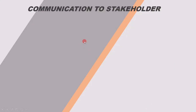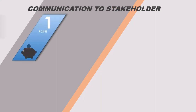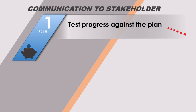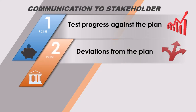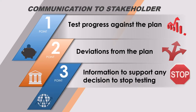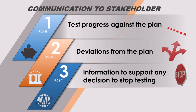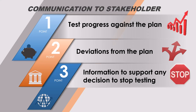One of the important points why we do test monitoring and control is to communicate information to the stakeholder. The first point is test progress against the plan. The second point is if there are any deviations from the plan. And the last point is information to support any decision to stop testing. These are the different types of information we can communicate to the stakeholder, and this information is gathered during the test monitoring phase.